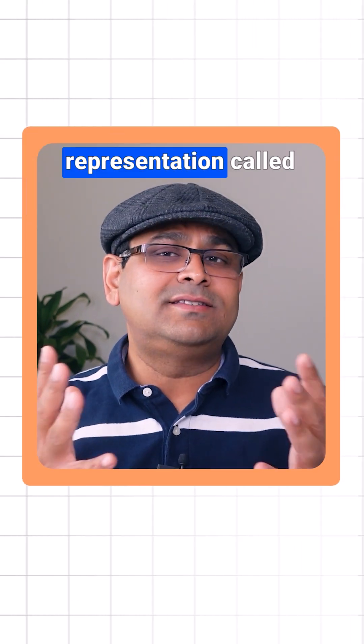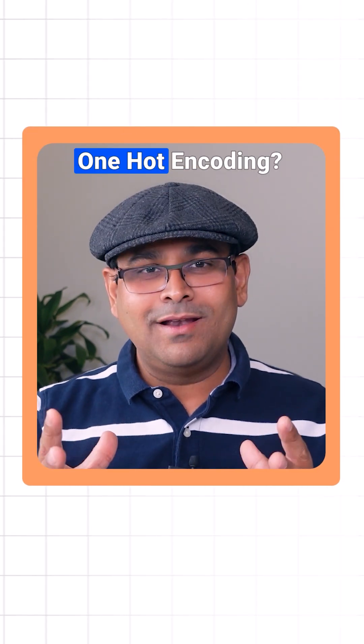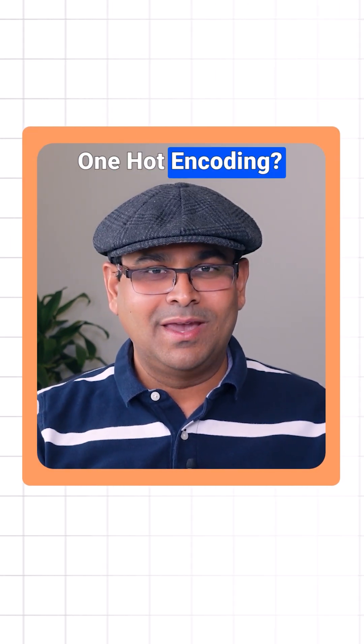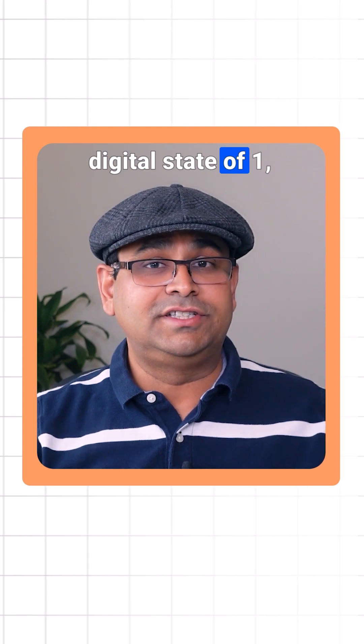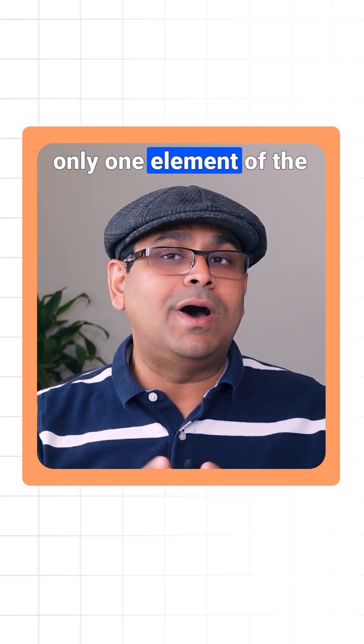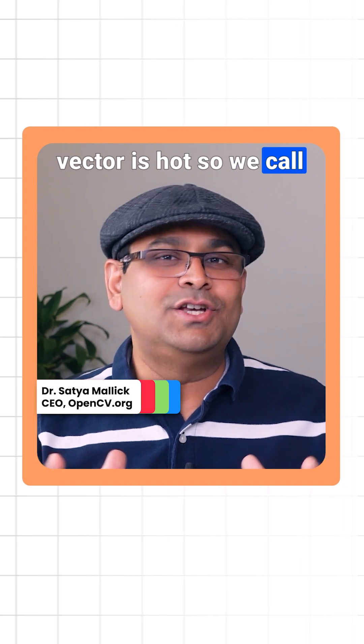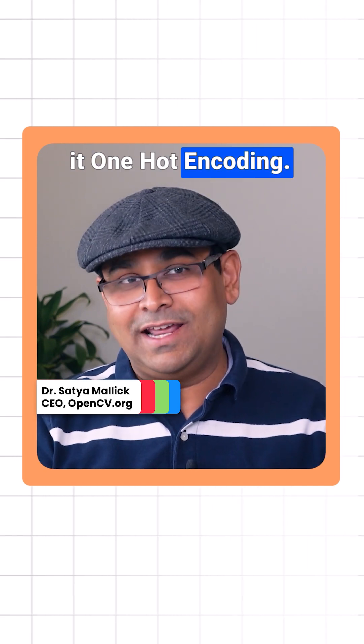Why is this representation called one-hot encoding? The term comes from electrical engineering. In a digital circuit, when a line has a signal or digital state of one, we call it hot. In this representation, only one element of the vector is hot. So we call it one-hot encoding.